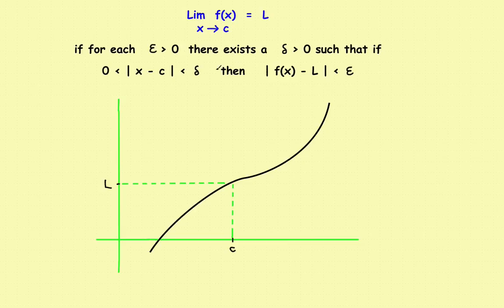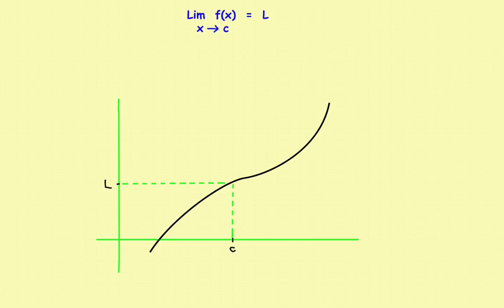Before we get into the epsilon and the delta part of this thing, the formal definition, most students when they're introduced to limits are given an informal introduction first, so let's go ahead and do that. We'll turn off this formal definition and just concentrate on the informal definition. So what the informal definition looks like is, and most of you should be familiar with this — it says as x approaches c,